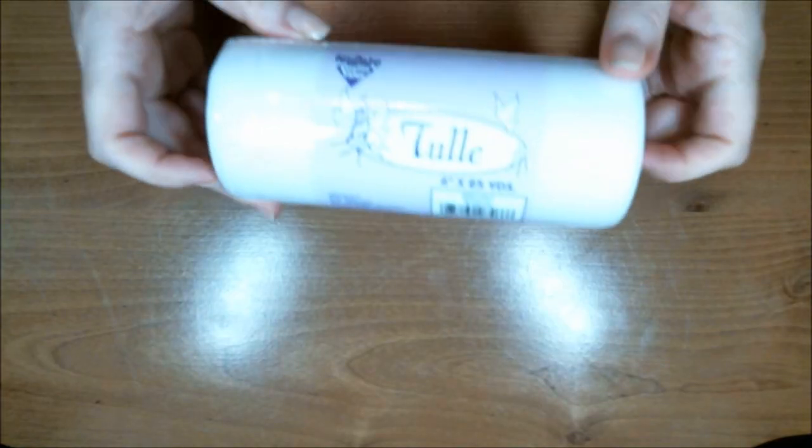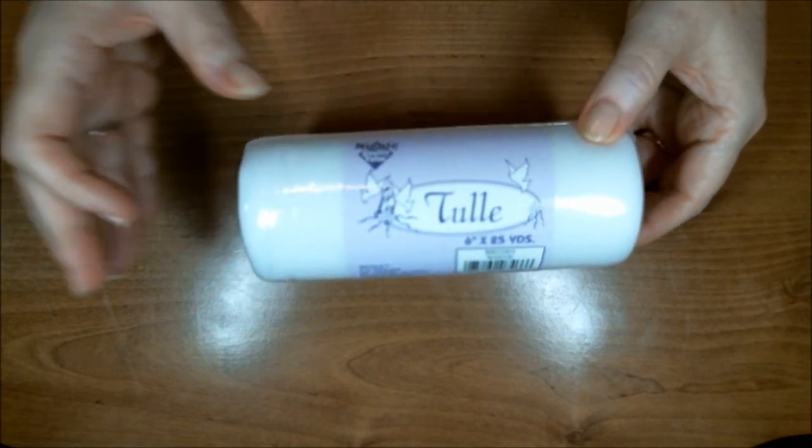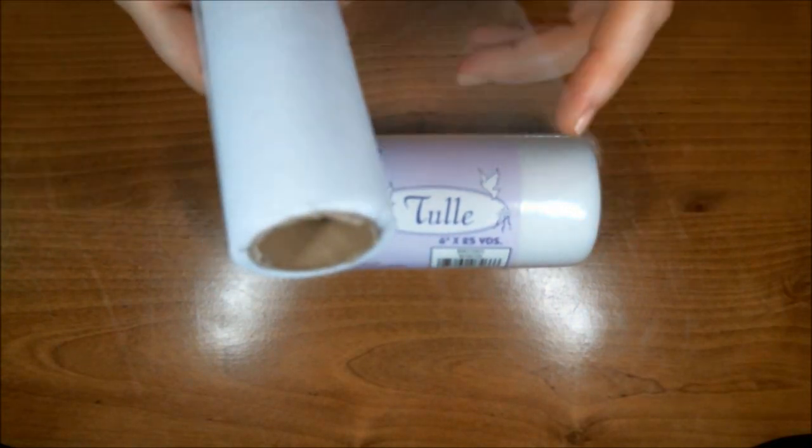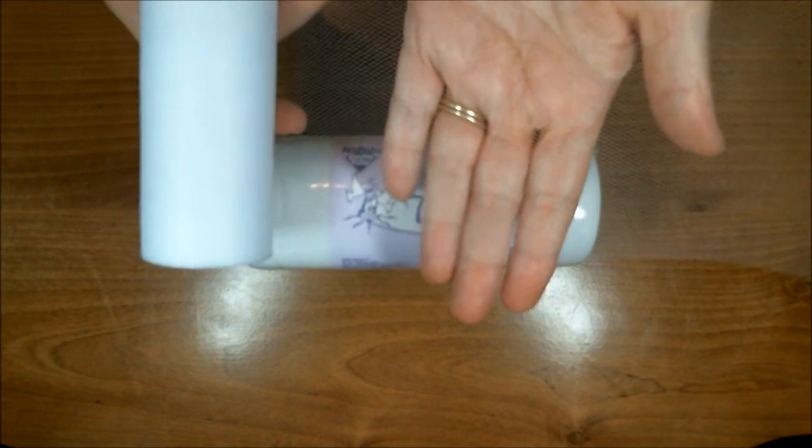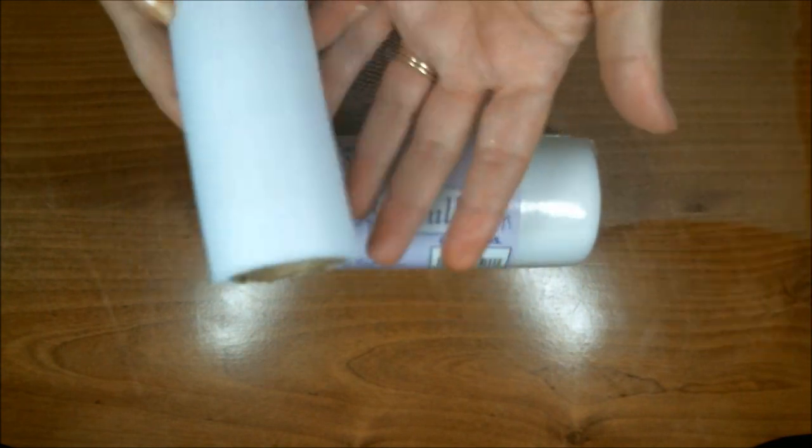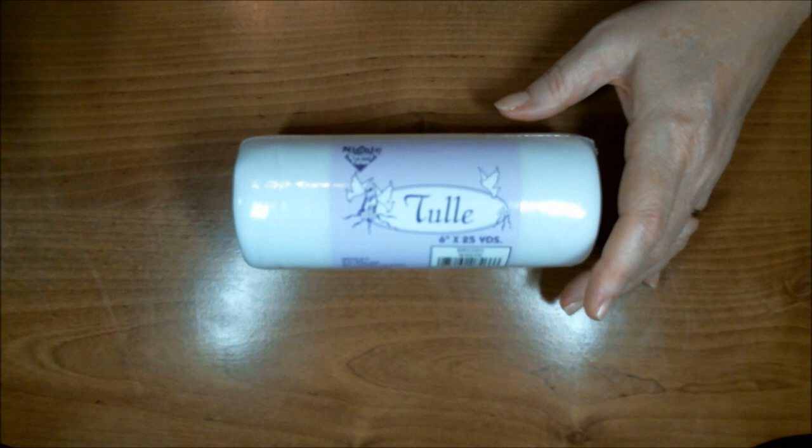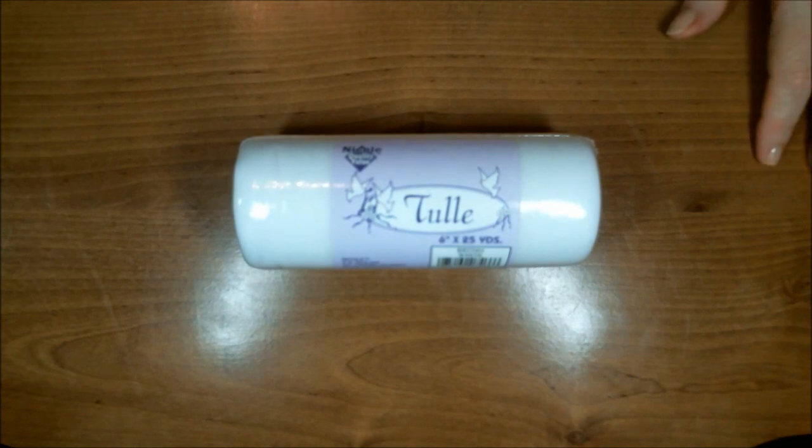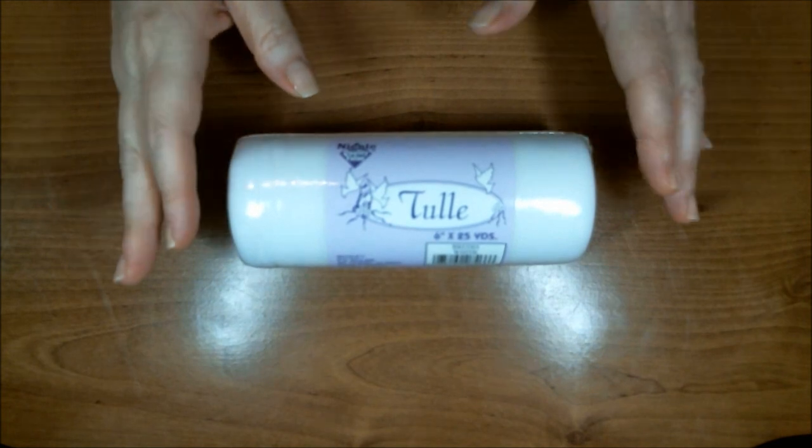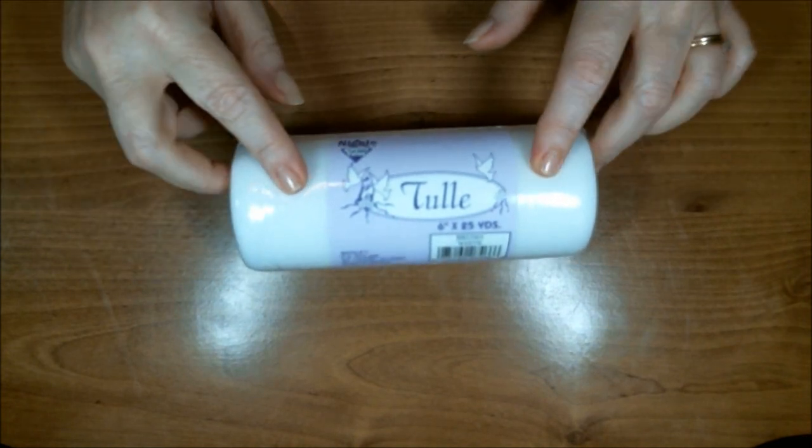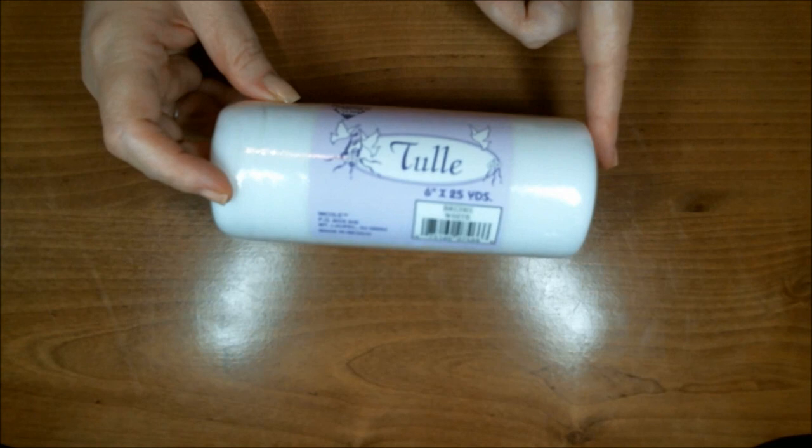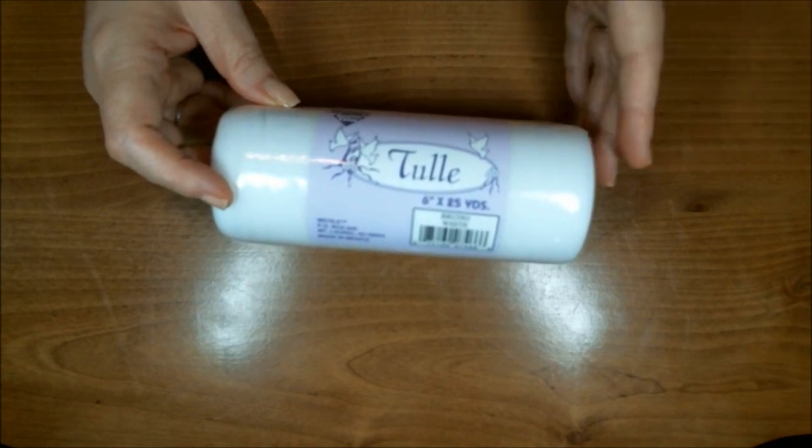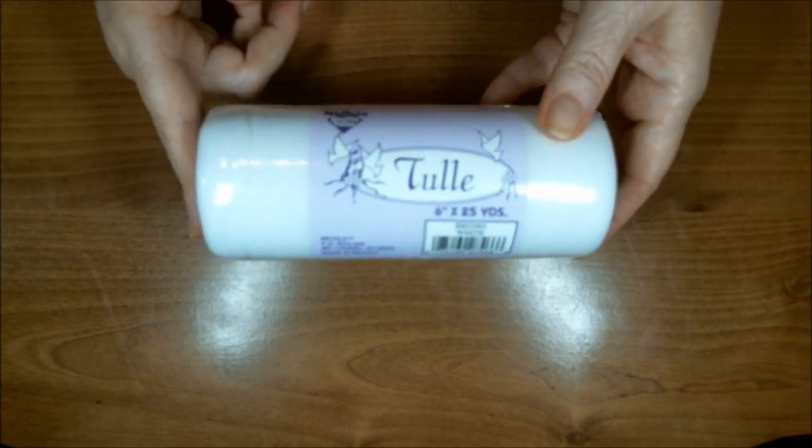The project is made with tulle, which is just a type of netting. I know it's kind of hard to see. I'm using white because I want to be able to change out my wreath for different seasons. You could use black for Halloween or browns for the fall, whatever you want to do. This is what you'll need and this is six inches wide and that's actually a pretty good size for what we're going to be applying it to.